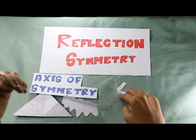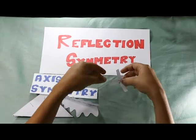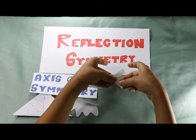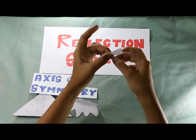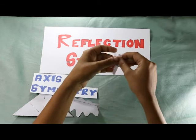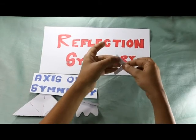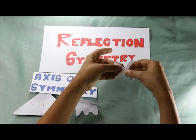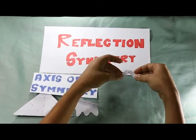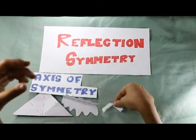For our third shape, we'll again fold it along the vertical line. Oh, but the two sides don't overlap perfectly. This means that the figure does not show vertical reflection of symmetry. But when folded horizontally, it folds perfectly and overlaps each other.